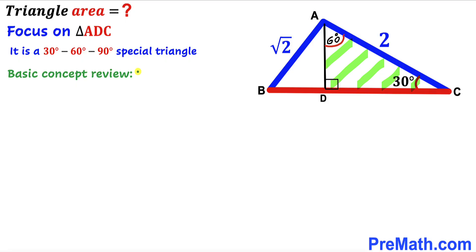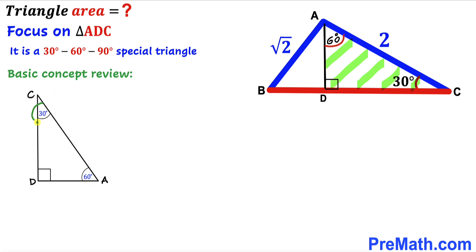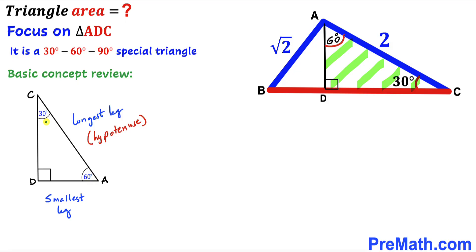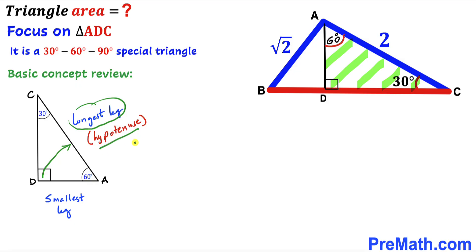Before we proceed, let me review the 30-60-90 special triangle. The 30-degree angle is the smallest and the 90-degree angle is the largest. The side opposite the smallest angle is the smallest leg, and the side opposite the largest angle is the hypotenuse — the longest side. In a 30-60-90 triangle, the hypotenuse is always twice the smallest leg. So if the smallest leg is 1, the hypotenuse is 2, and the third leg is square root of 3.